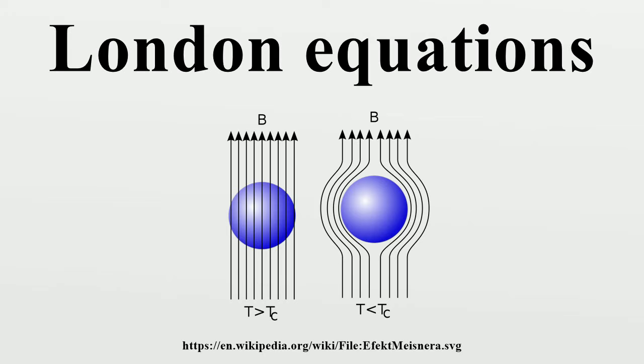e is the charge of an electron and proton, m is electron mass, and ns is a phenomenological constant loosely associated with a number density of superconducting carriers. Throughout this article Gaussian units are employed.